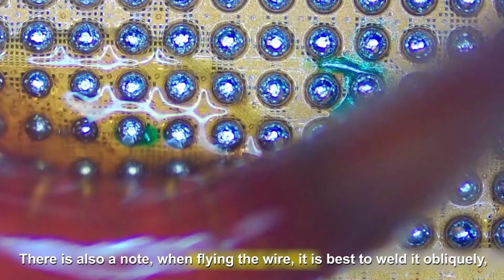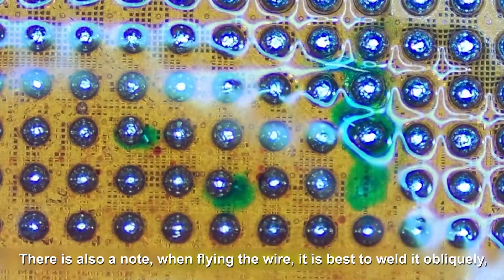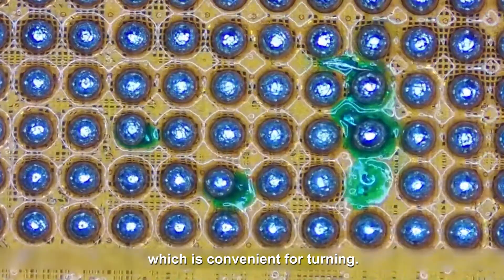There is also a note, when flying the wire, it is best to weld it obliquely, which is convenient for turning.